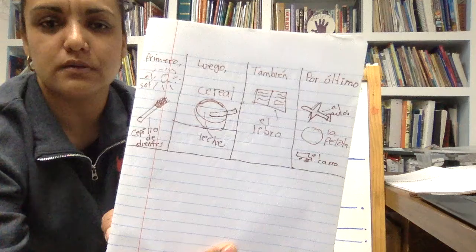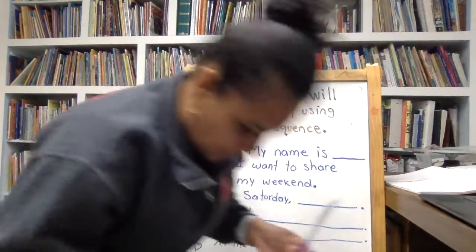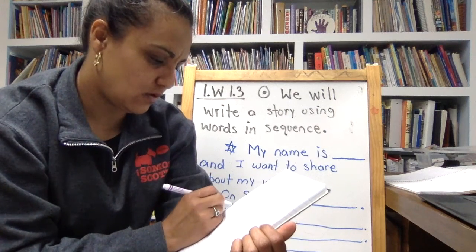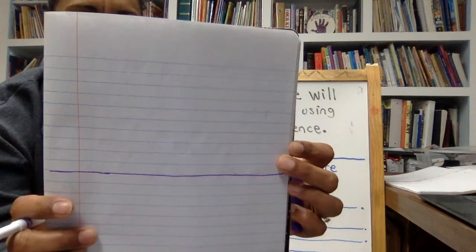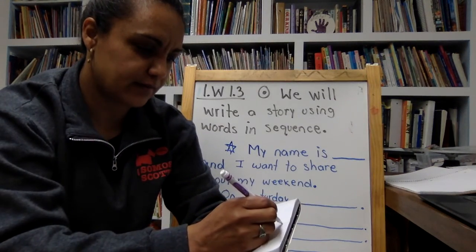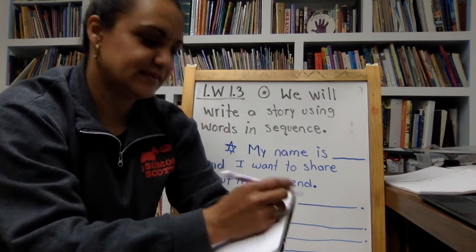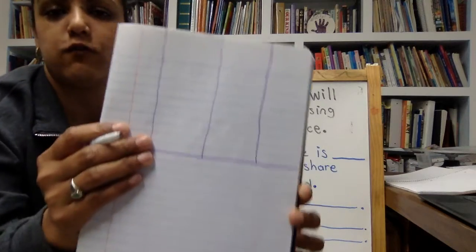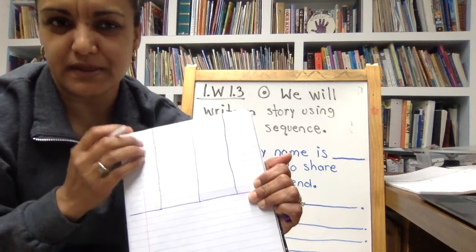I'm going to use a different color — purple — so you don't get confused. The first step: you're going to divide your paper in half, top and bottom, just like that. Then the top part you're going to divide in half again. Then this half you're going to make another line. At the end you'll have four little rectangles — can you count them? One, two, three, four.